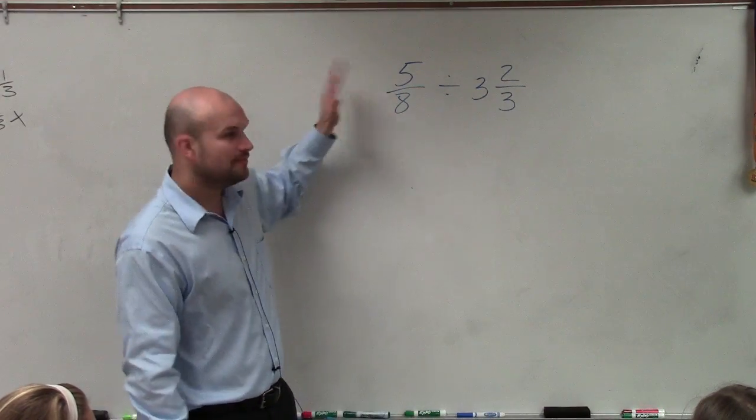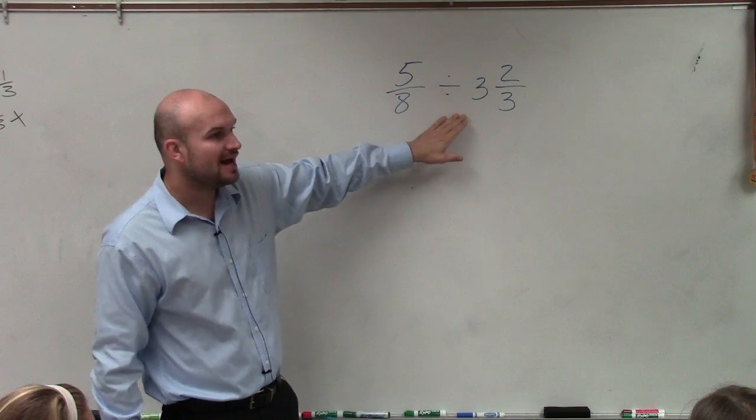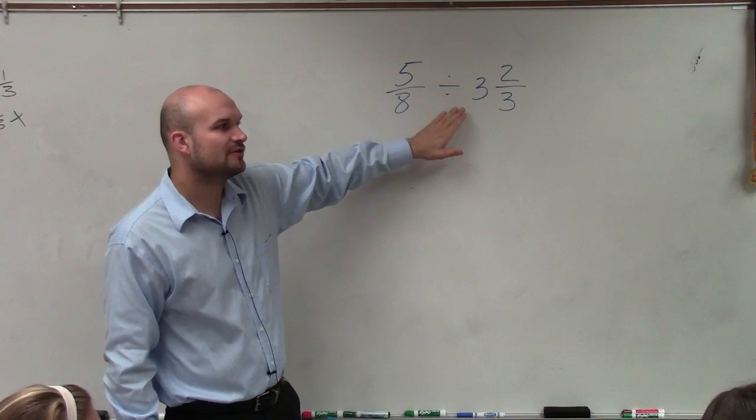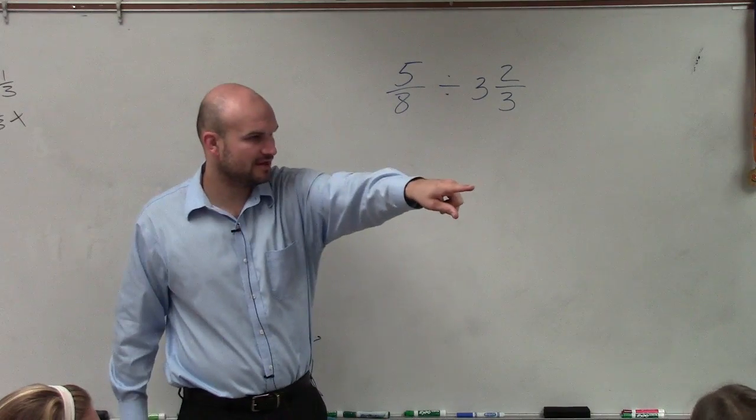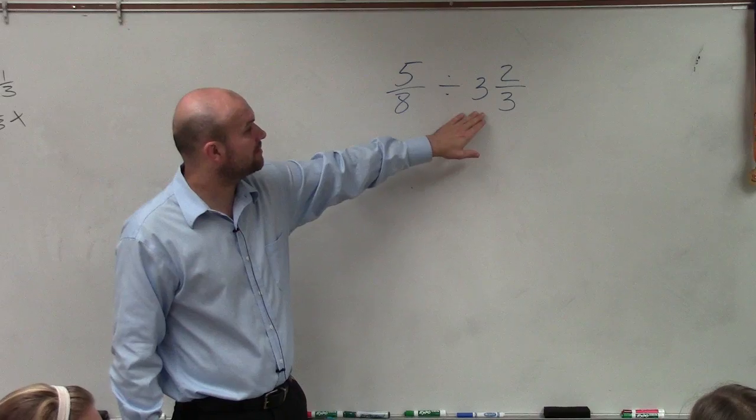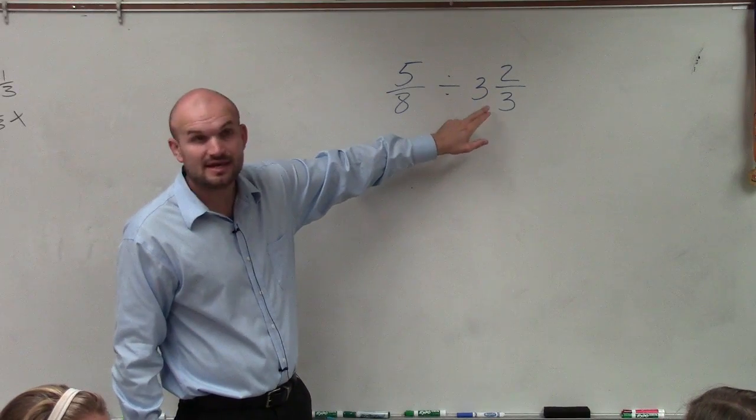When we multiply, we multiply directly across. But when we divide, what we're going to do is convert this to a multiplication problem. So to do that first, though, what we're going to have to do is rewrite this as an improper fraction.